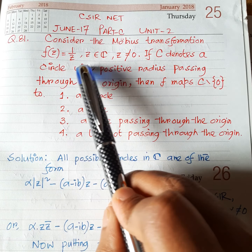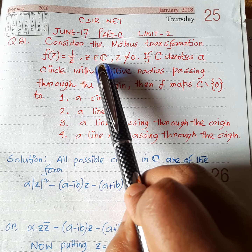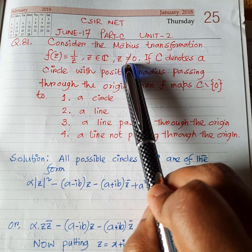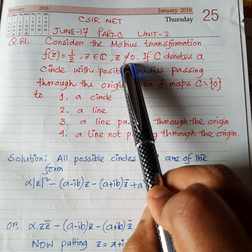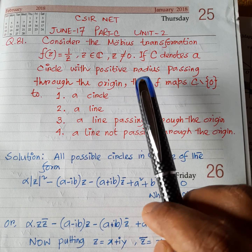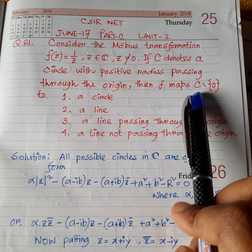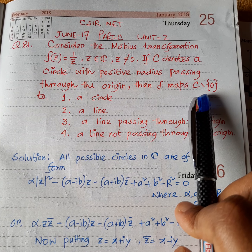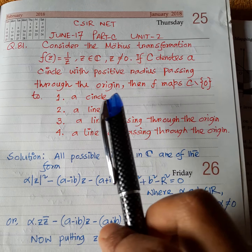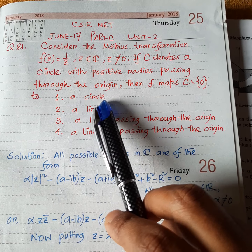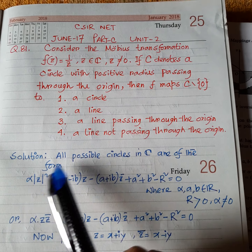...equal to 1/z, where z is taken from the finite complex plane and f is not defined at the origin. C denotes a circle with positive radius passing through the origin. Then under this map f, the image of C minus {0} — that is, from the circle we remove the point 0 — the image of C minus {0} under f is: